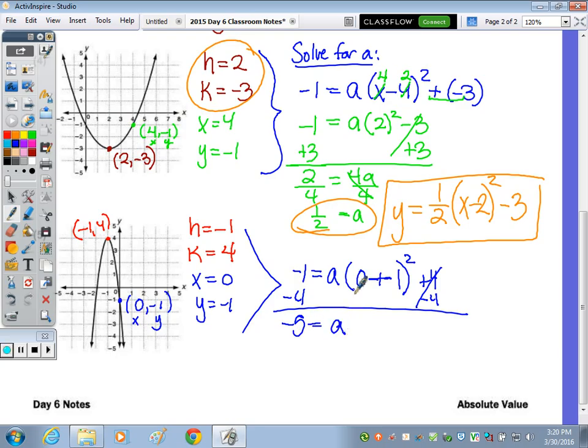So instead of k, we need to put in the plus 4. So I'm going to subtract the 4. We get negative 5 equals a times, well 0 plus 1 is 1, 1 squared is 1. And then a times 1 is a. So a is equal to negative 5.